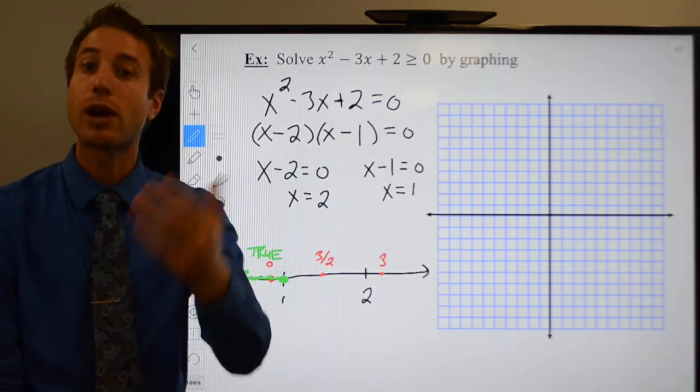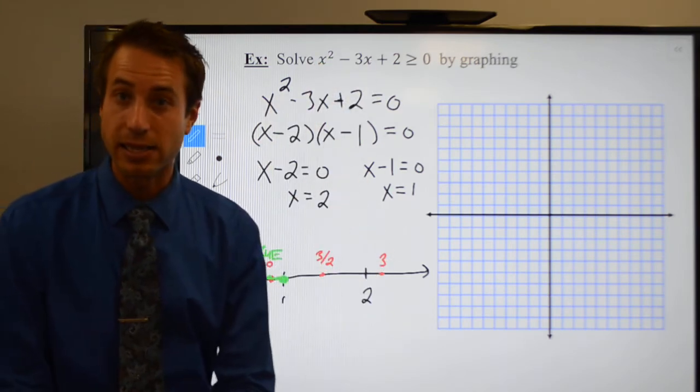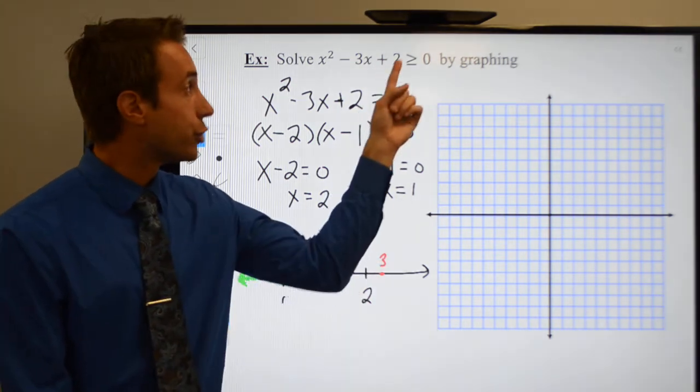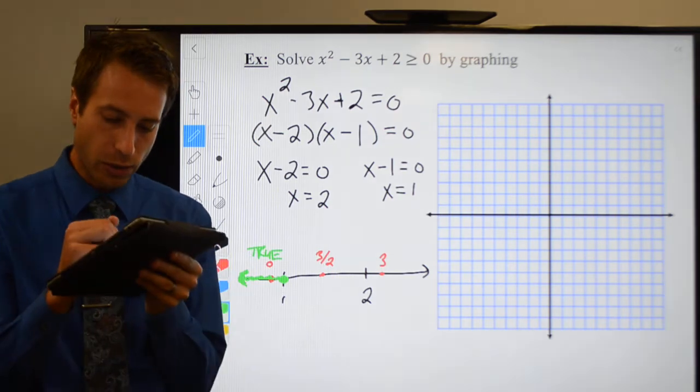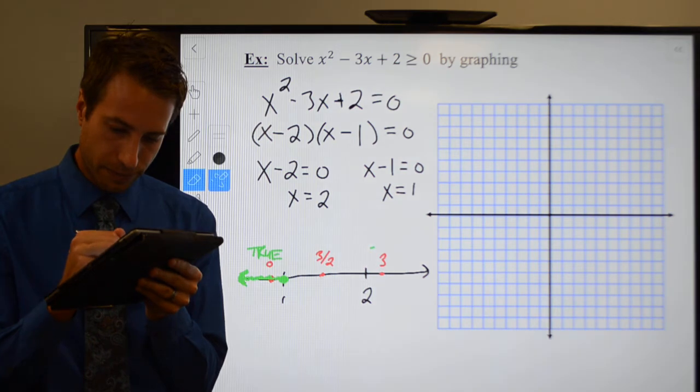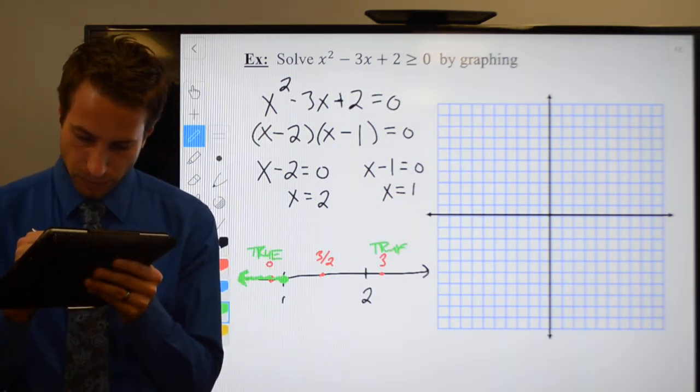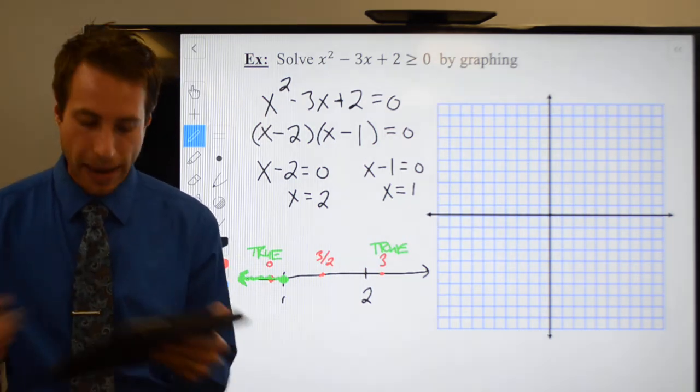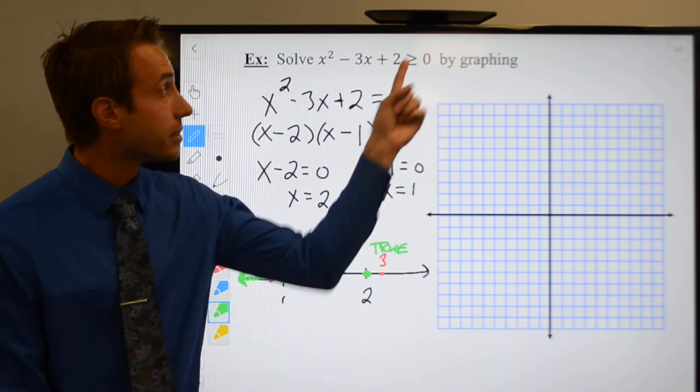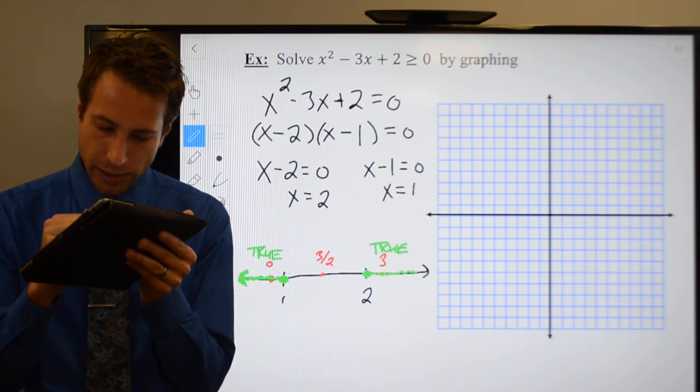Let's try 3. If I plug in 3, 3 squared is 9. 3 times negative 3 would be minus 9. 9 minus 9 would be 0, and 0 plus 2 is 2. Again, 2 is greater than or equal to 0, so this also is a true statement and represents one of my intervals. It'll be a closed circle on 2 because it's greater than or equal to, and everybody headed in this direction.